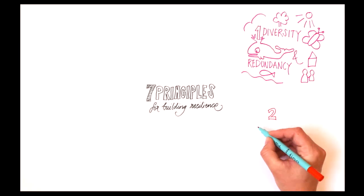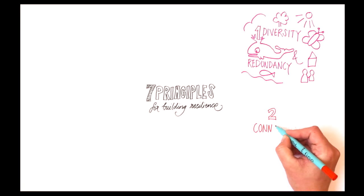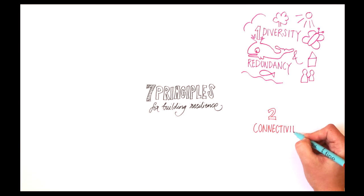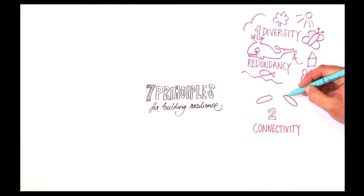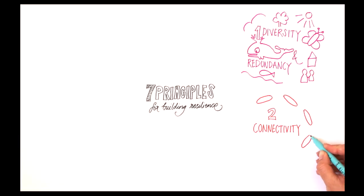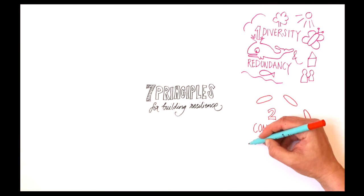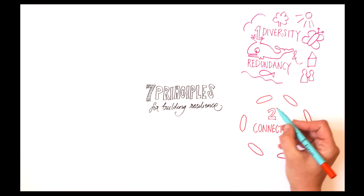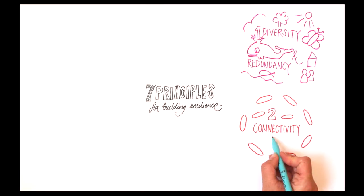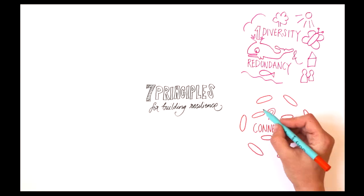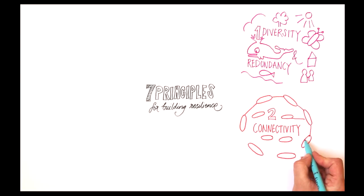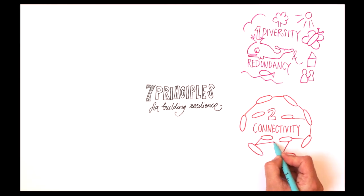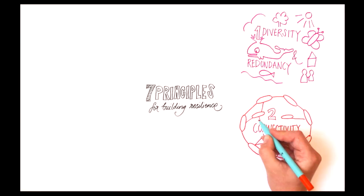Principle 2: Manage connectivity. Connectivity can be both a good and a bad thing. Well-connected systems can recover from disturbances more quickly, but overly connected systems may lead to a rapid spread of disturbances.